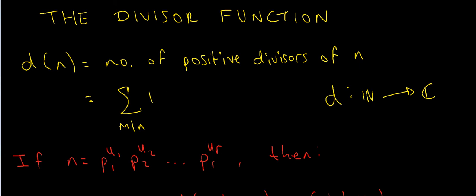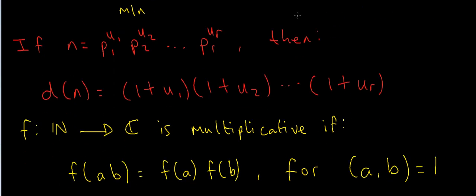So d is an arithmetic function, and recall that in the previous video we looked at and proved this formula. It says that if n has prime factorization p1^u1 times p2^u2, all the way up to pr^ur, where p1, p2 are primes and u1, u2, ..., ur are the powers of these primes, then d(n) = (1+u1)(1+u2)...(1+ur). This is a quick way of calculating the number of divisors of a large number if you know its prime factorization.